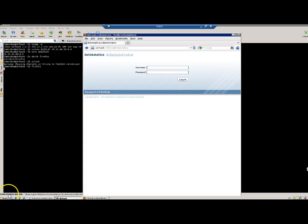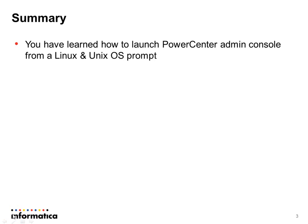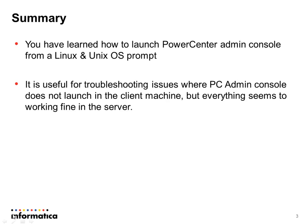In summary, today you have learned how to launch the PowerCenter admin console from a Linux or Unix OS prompt. These steps are very useful for troubleshooting issues where the PowerCenter admin console does not launch on a client machine for some reason, but everything seems to be working fine on the server. By doing these steps you can confirm that everything is working fine on the PowerCenter side — most likely there is something between the client machine and the PowerCenter server, such as a firewall blocking a port, that is preventing the admin console from launching as expected.